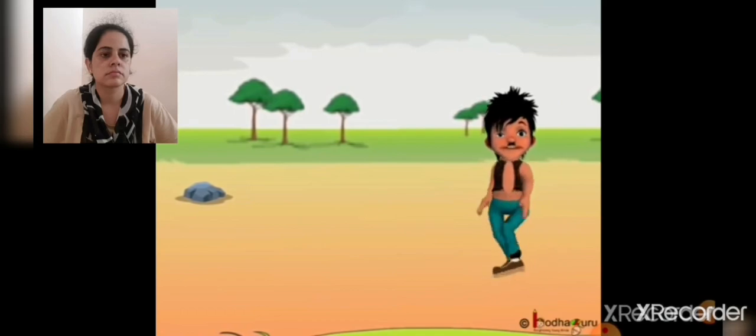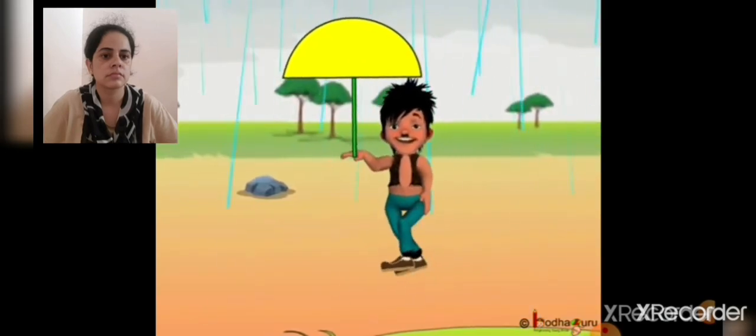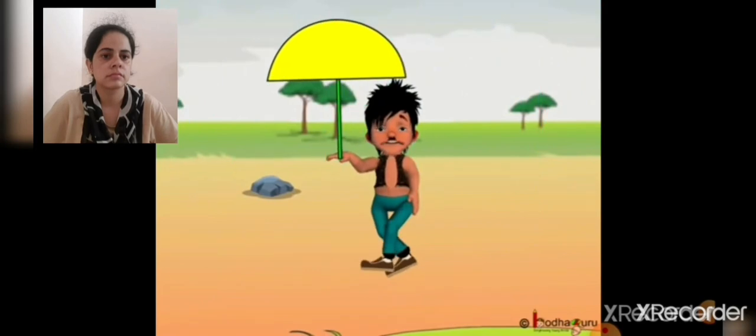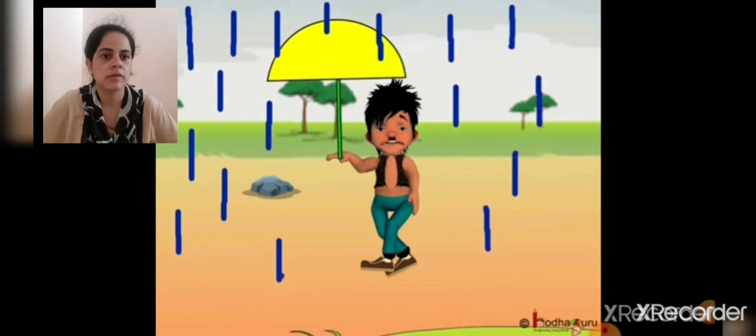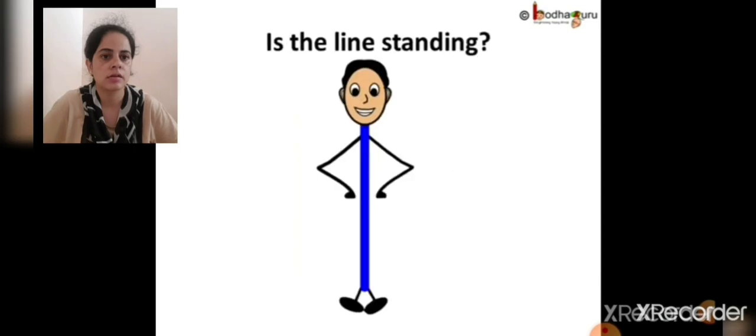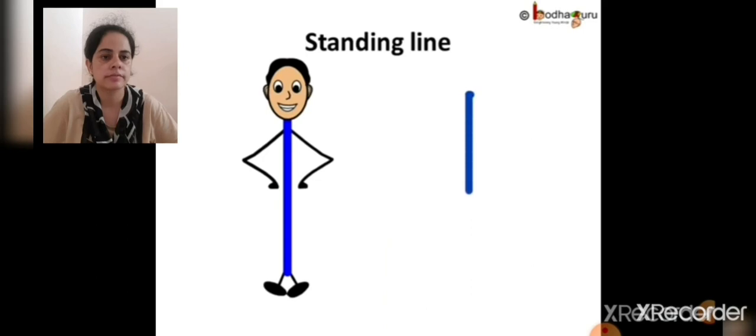We saw Bola had a nice walk. He saw so many things: rain, hills, sun, lake, boat, and even a duck. Bola really enjoyed the rain. Can it rain again? Yes, we can — it is raining again! Bola can enjoy the rain now. How did we draw the rain? This is a line — doesn't it look like the line is standing? Let us call it a standing line.